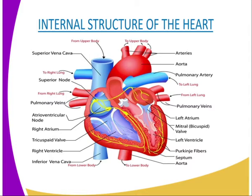The right ventricle pumps blood for a short distance to the lungs, hence that is why it has a thin wall. Between the atrium and ventricle we have atrioventricular valves, which are also known as the cuspid valves. Their function is to prevent blood from flowing back into the atria when the ventricles contract.